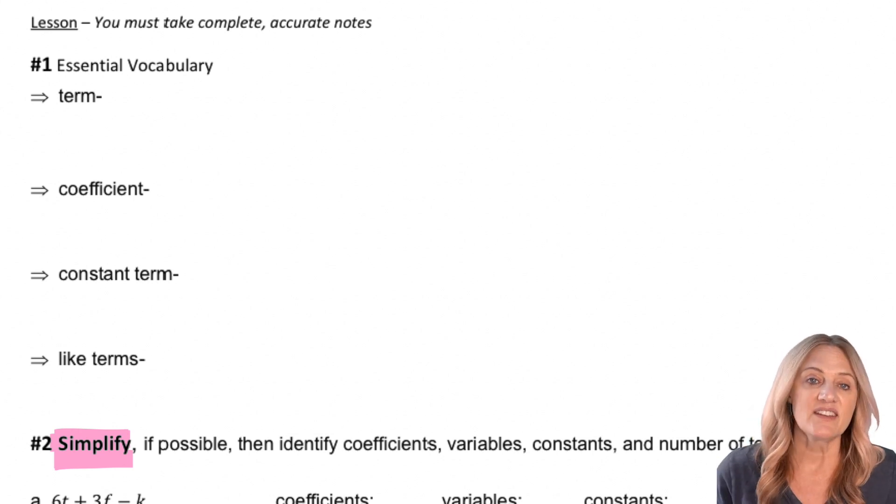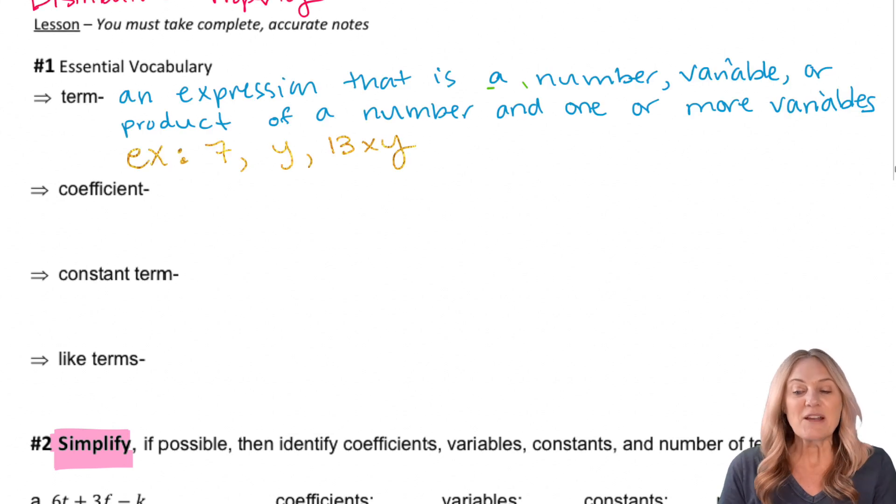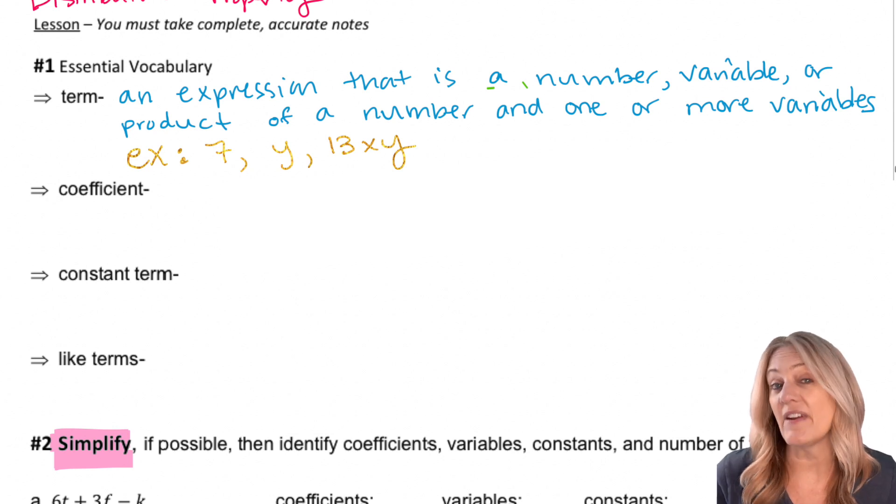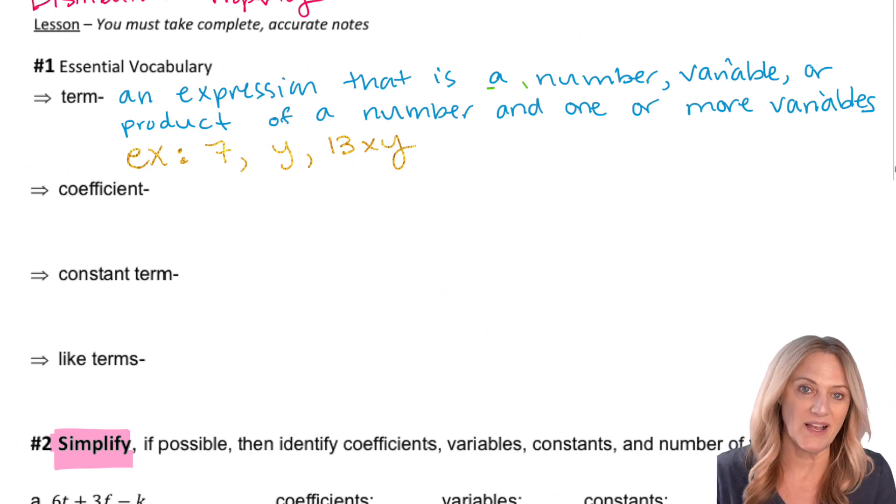Let's identify some key terms for this section. Term is the first one: an expression that is a number, variable, or a product of a number and one or more variables. Example: 7y, 13xy, anything that is being multiplied together.